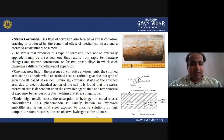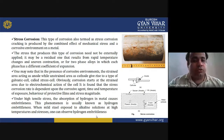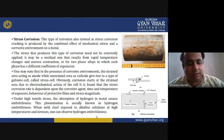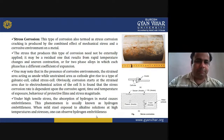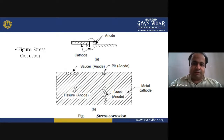This phenomenon is known as hydrogen embrittlement. When mild steel is exposed to alkaline solution at high temperatures and stresses, hydrogen embrittlement can be observed. The stress corrosion rate is dependent on the corrosive agent, time and temperature of exposure, behavior of protective films, and stress magnitude. The crack propagation is visible in the diagram.